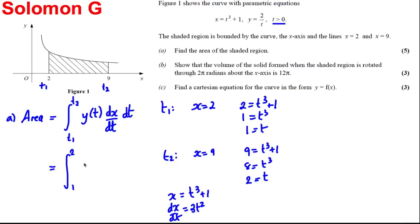y given in terms of t, which is 2 over t, dx by dt, which is 3t squared, with respect to t.